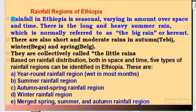The rainfall situation in Ethiopia is characterized by its seasonality, varying in amount over space and time. The rainfall amount varies from time to time and from place to place in our country. In summer, there is long and heavy rain, which is known as the big rain.